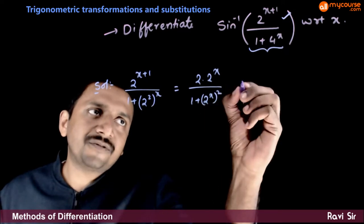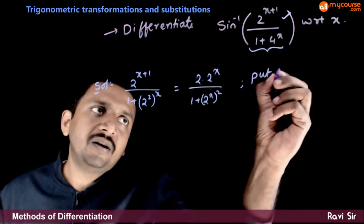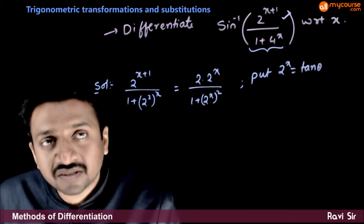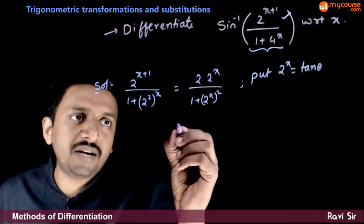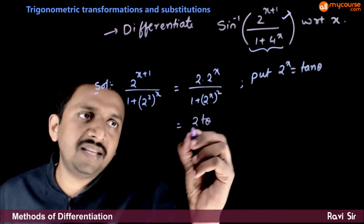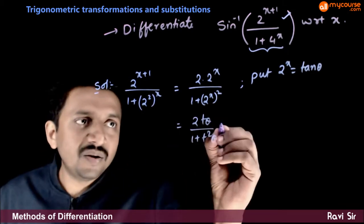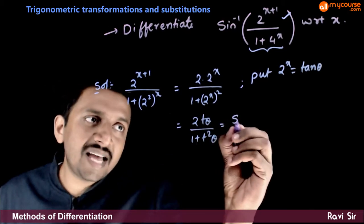So, now put 2 power x is equal to tan theta, see what happens if you do this. So, if 2 power x is equal to tan theta, this becomes 2 tan theta by 1 plus tan square theta, which is nothing but sin 2 theta.